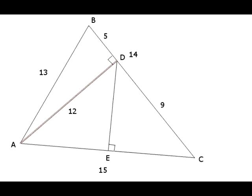While we're here, we can pick the low-hanging fruit. By using Pythagorean Theorem, we can see that the two right triangles ABD and ADC are 5-12-13 and 9-12-15 triangles, respectively.